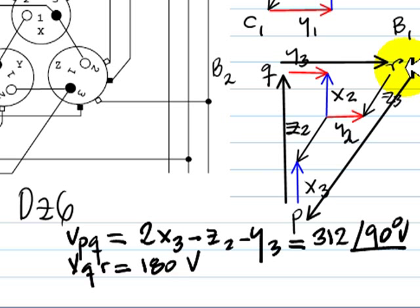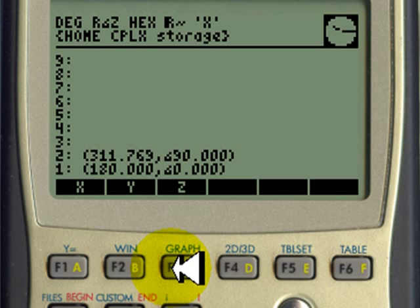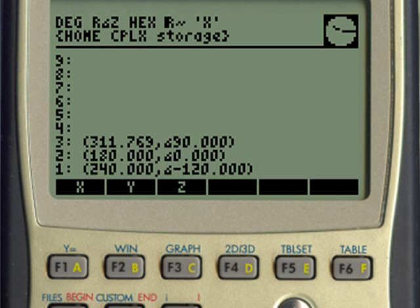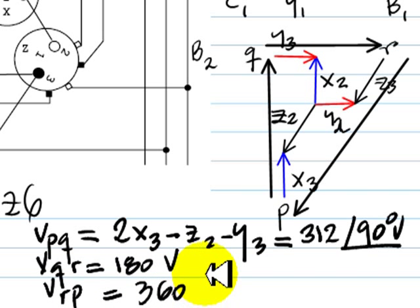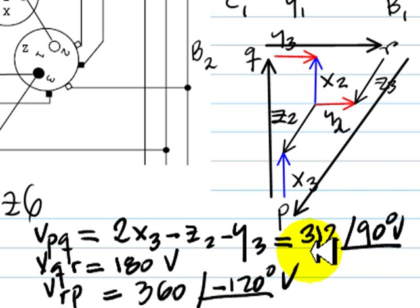And last, this voltage RP. That is Z minus Y plus Z minus X. That is two Z minus Y minus X. Let's do that. Z, Z, addition, X, subtraction, Y, subtraction. That is the voltage. 360 volts with negative 120 degrees. And I write VRP is 360 volts with negative 120 degrees. And that is a solution to this exercise.